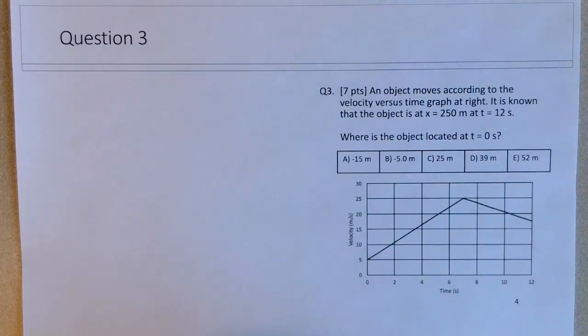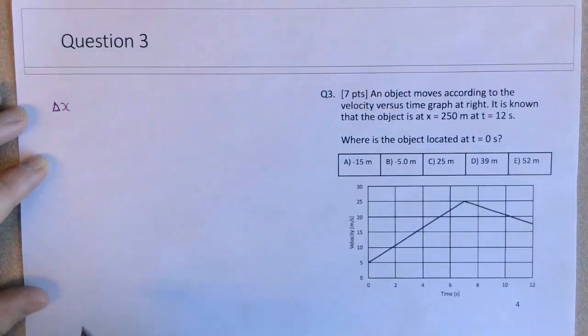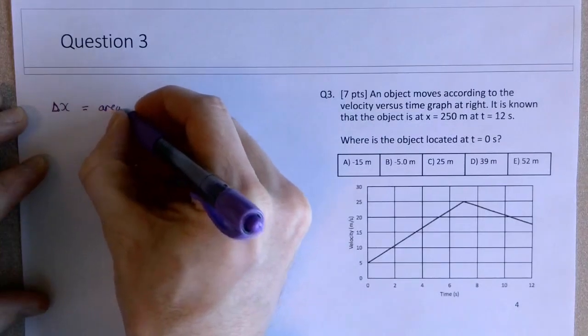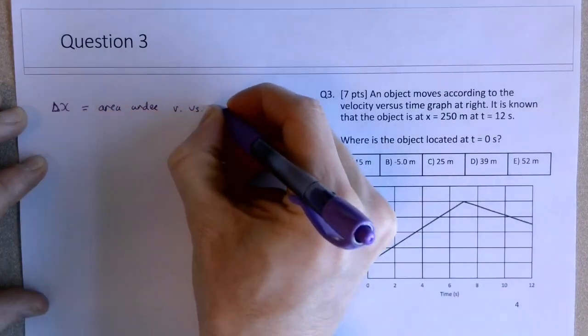The question is related to the area under the curve. The major concept that's been examined here is do you understand that the displacement of an object is equivalent to the area underneath a v-t curve. So delta x - and it's important that you know it's delta x and not the position - the change in the position is equal to area under v versus t curve.